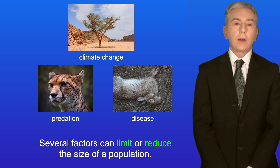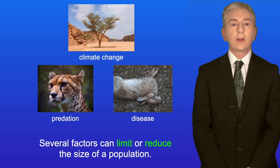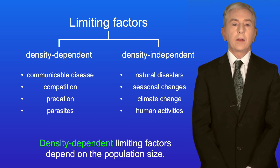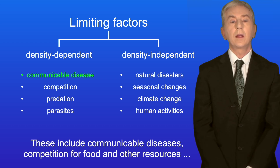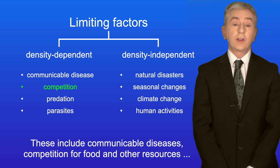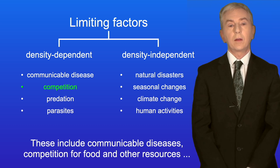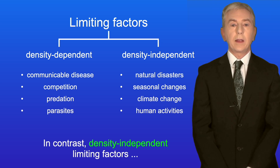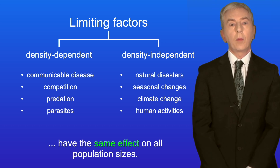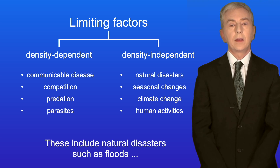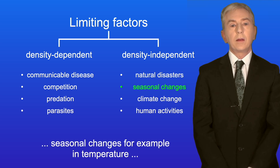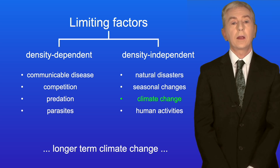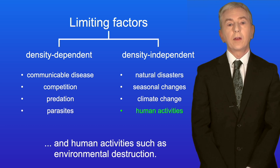Several factors can limit or reduce the size of a population — these are called limiting factors. Density dependent limiting factors depend on population size and include communicable diseases, competition for food and other resources, predation and the spread of parasites. Density independent limiting factors have the same effect on all population sizes and include natural disasters such as floods, seasonal temperature changes, longer term climate change, and human activities such as environmental destruction.